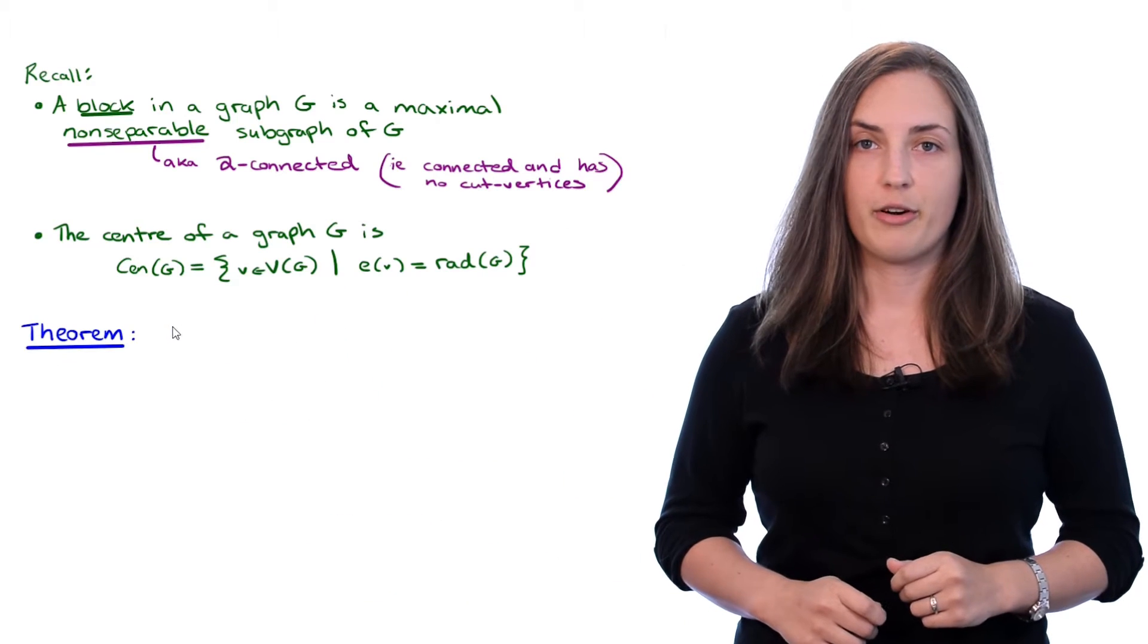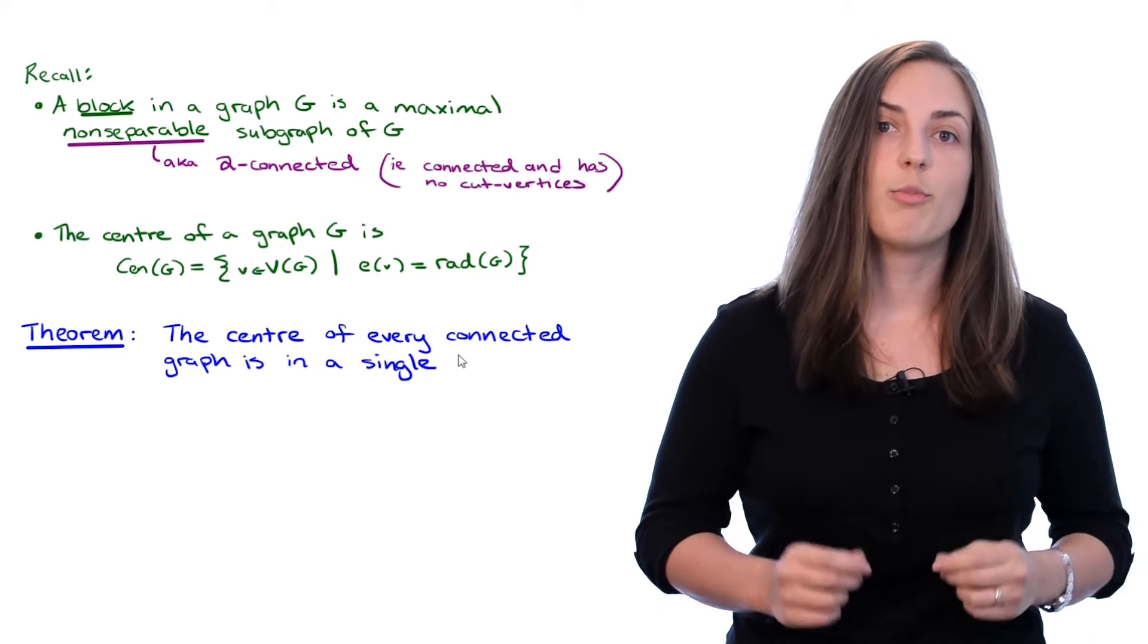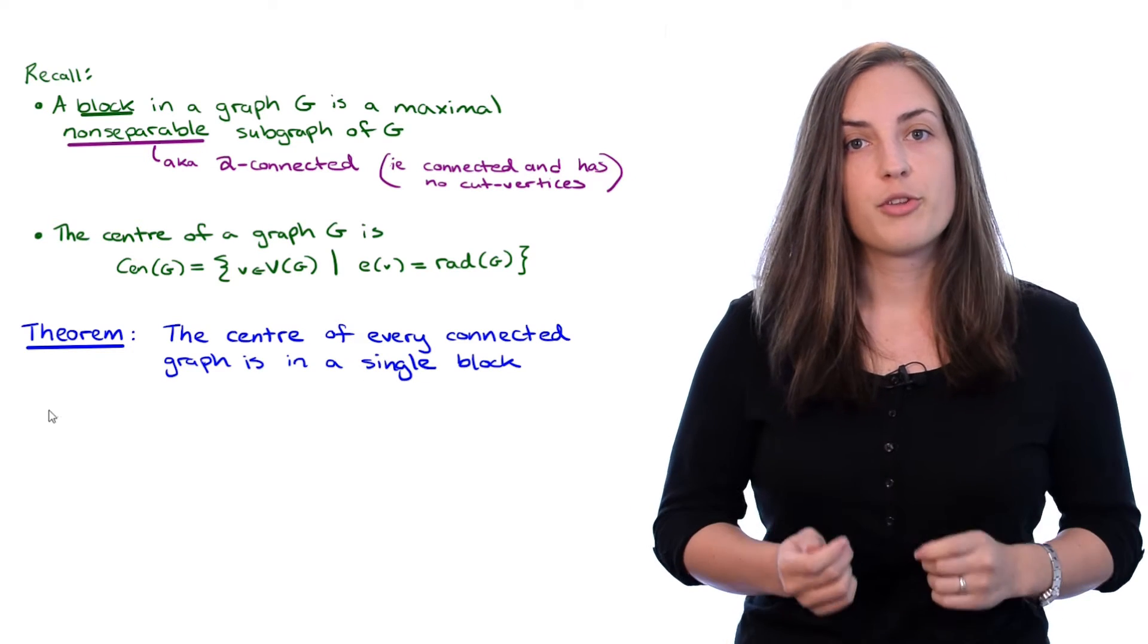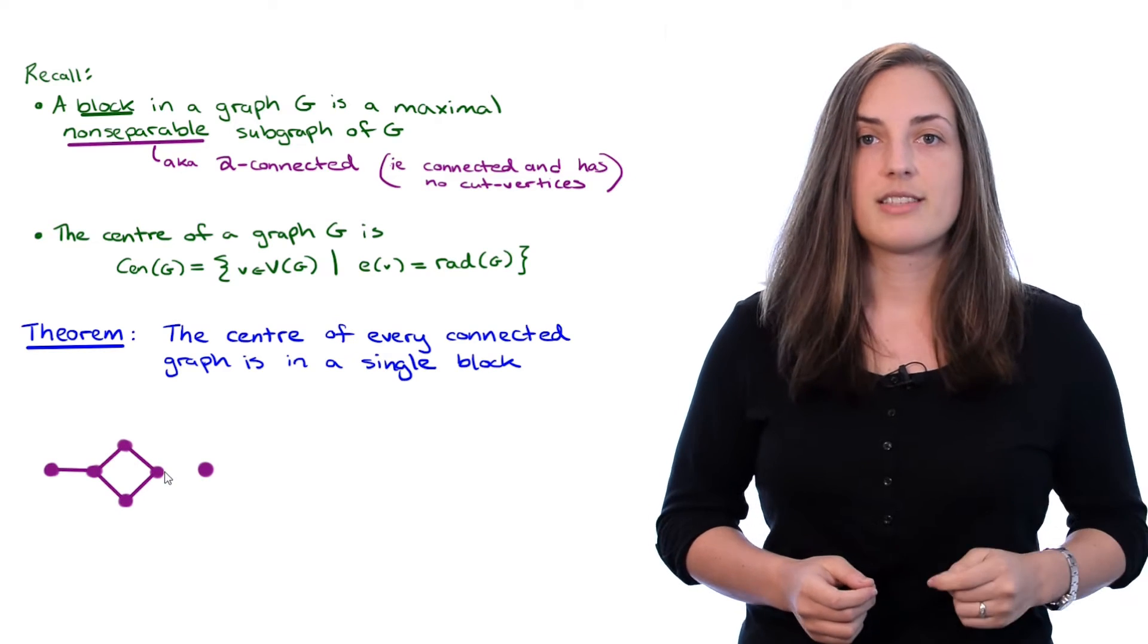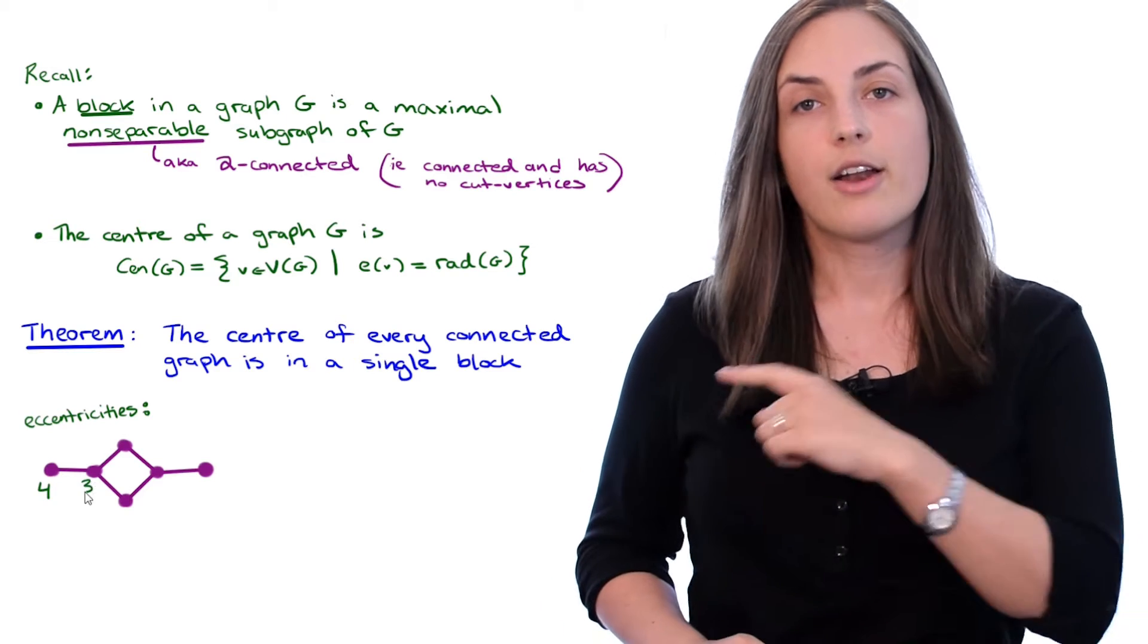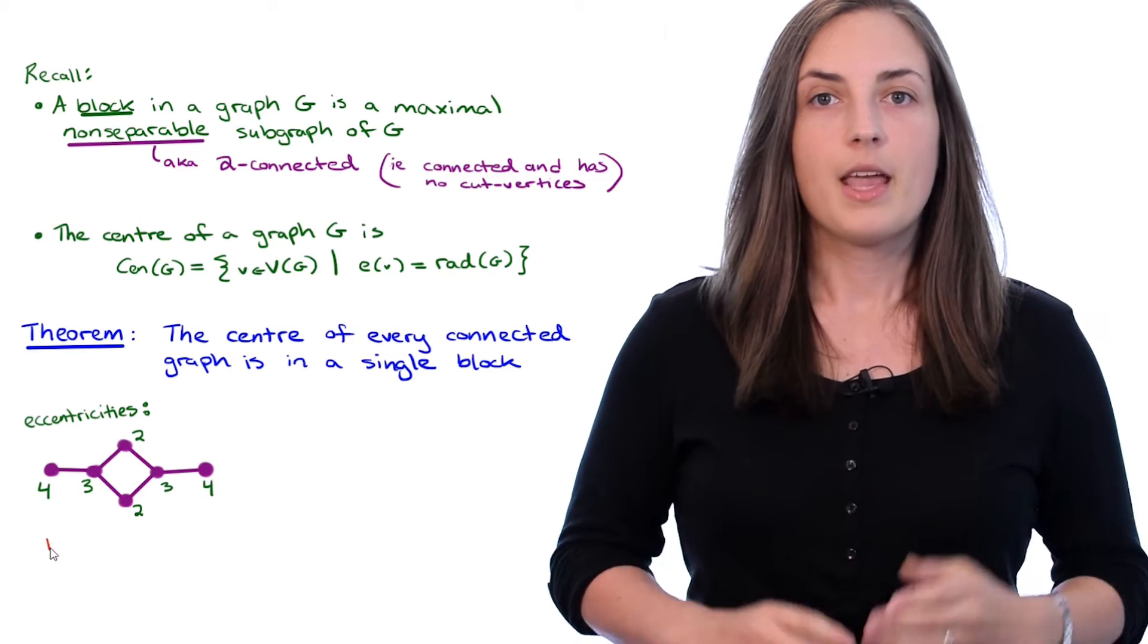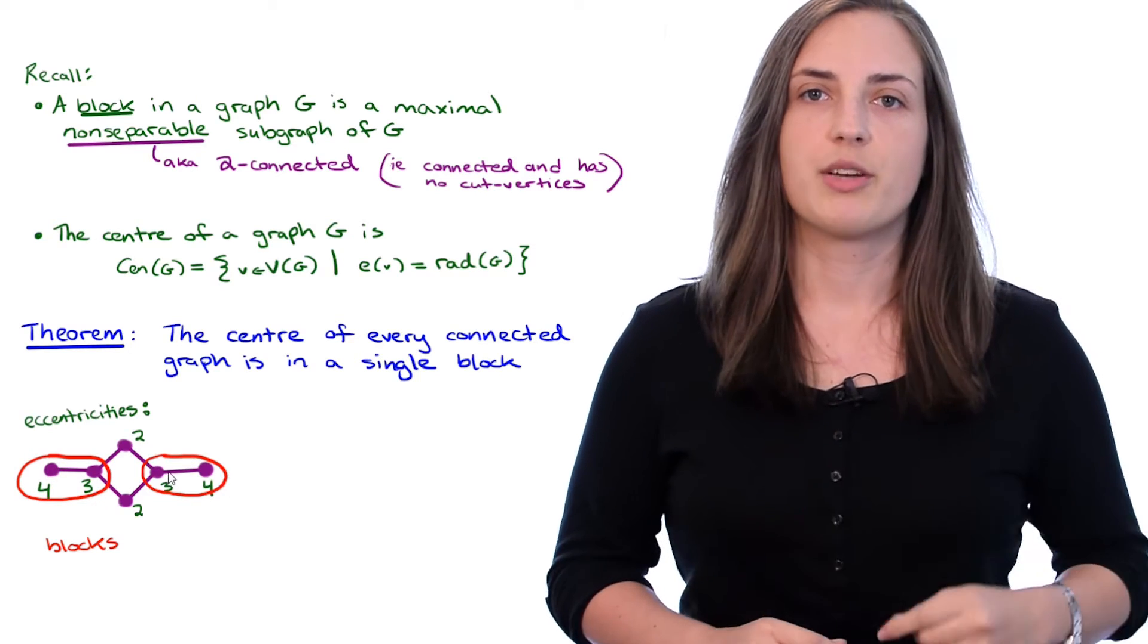We want to prove the following theorem, that the center of every connected graph lies within a single block of that graph. Before we do the proof, let's start with a small example on six vertices. So here's our example. First, let's find the eccentricity of every vertex, and I'll label those in green. Now let's highlight where the blocks lie. I'm just going to highlight the blocks using red.